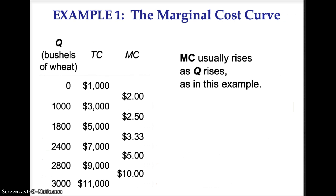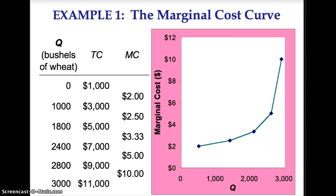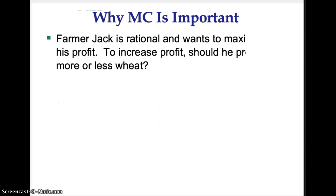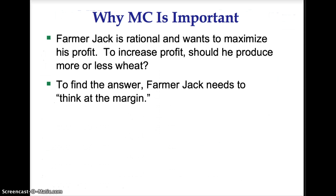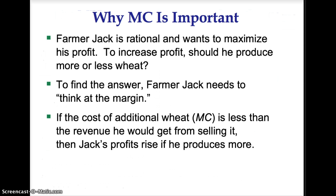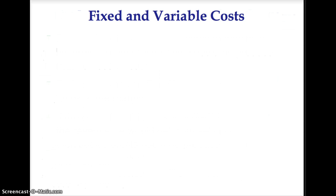Marginal costs can be illustrated on a graph with marginal costs on the vertical axis and quantity on the horizontal axis. Why is marginal cost important? Farmer Jack is rational and wants to maximize his profit. To increase profit, should he produce more or less wheat? Farmer Jack needs to think at the margin. If the marginal cost of an additional unit of wheat is less than the revenue he would get from selling it, then Jack's profit will rise if he produces more. There are two types of costs: fixed costs and variable costs.